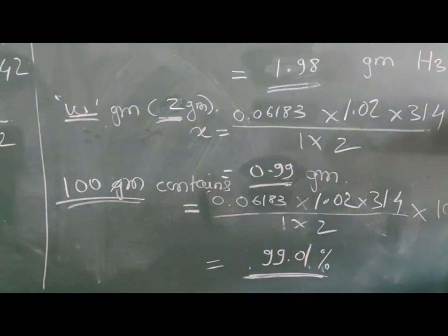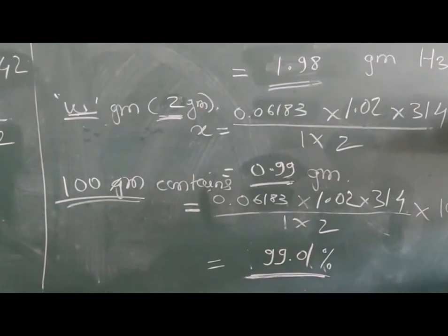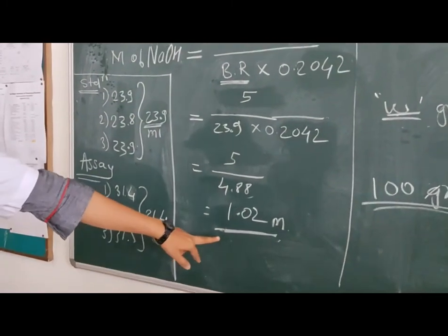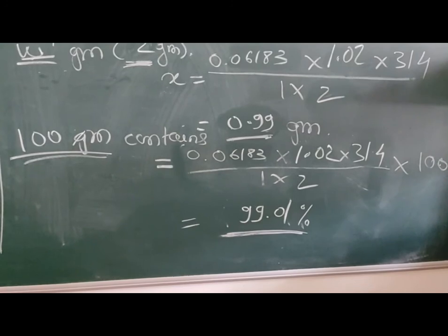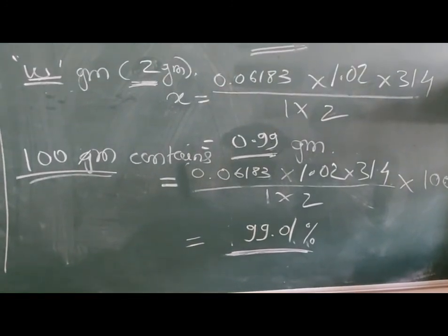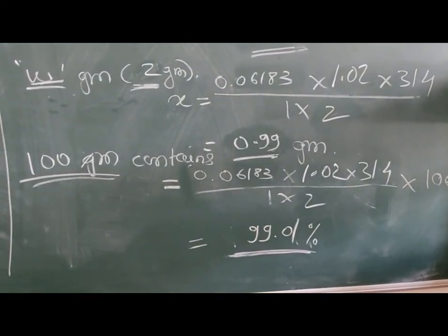The result is molarity of 1 molar sodium hydroxide is 1.02 molar, and the percent purity of given sample of boric acid is 99.01%. Thank you.